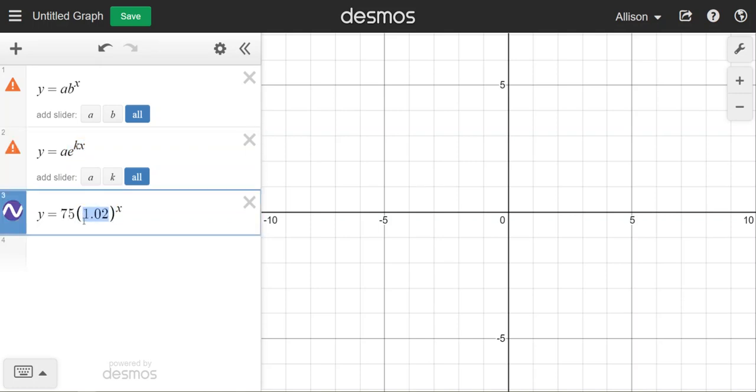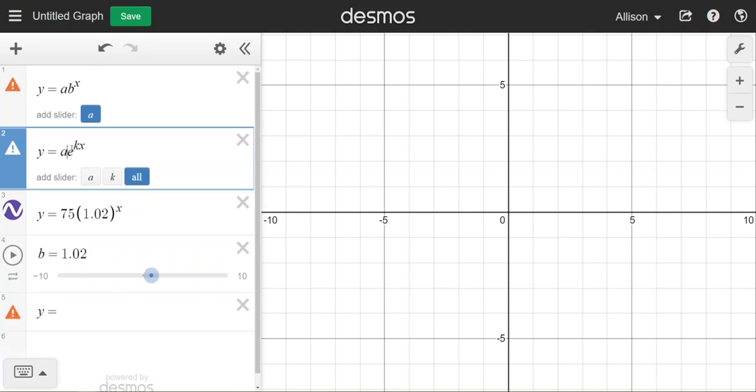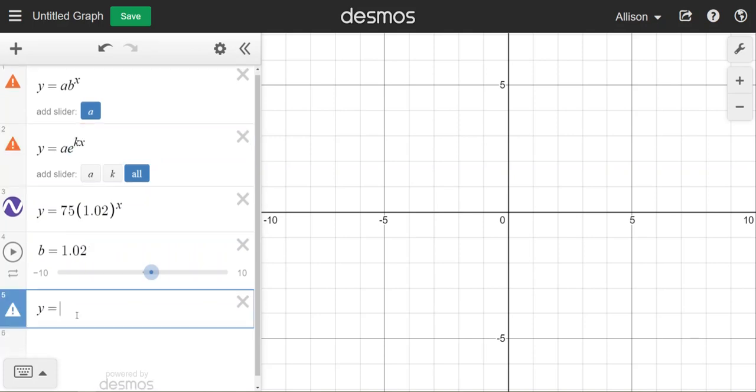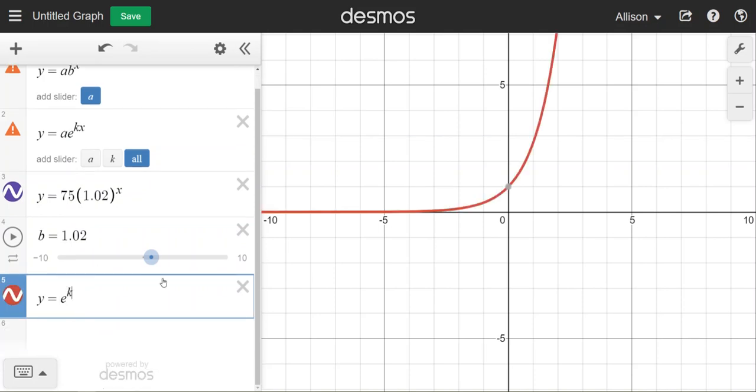So the b value that I have chosen for this function is 1.02. So usually you would be given your rate or your growth factor. And I just made mine up right here for this example. So the b value that I've been given or chosen was 1.02. That needs to be equal to e to the k. And my goal is to figure out what k is. So I'm going to graph y equals e to the k. And we're going to look for our k value.